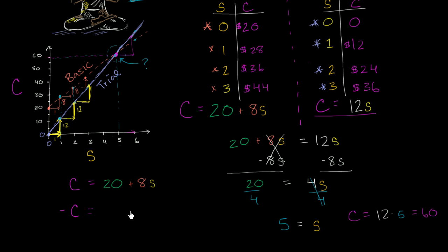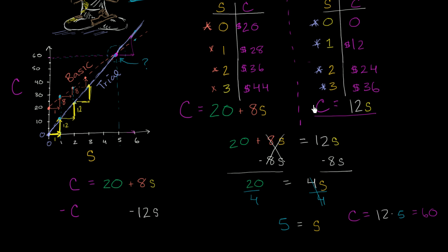He's like, no, Sal, you don't get it. I'm going to subtract c from the left hand side, but I know that we're looking for an s where 12s is going to give us the same as whatever c is. This cost — whether I use the basic plan or whether I use the trial plan — I'm going to get the same cost. So I'll subtract that cost from the left hand side, because that'll cancel out. But from the right hand side, I'll just subtract 12s. He says, I'm just going to subtract c from the left hand side, and I'm going to subtract 12s from the right hand side. He's essentially subtracting this equation from that equation — subtracting c from the left hand side and 12s from the right hand side.